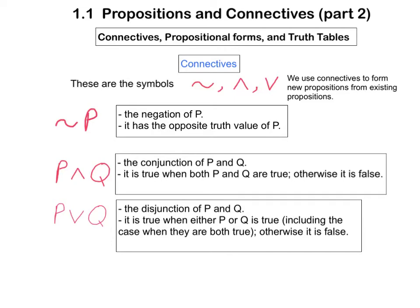Then we can create this new proposition. It's called the negation of P, and it has exactly the opposite truth value of P. So, the negation of P is true if P happens to be false, and the negation of P is false if P happens to be true.